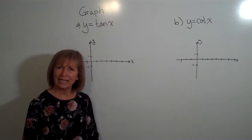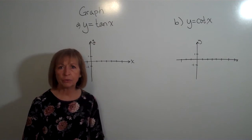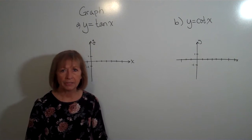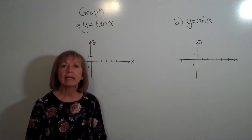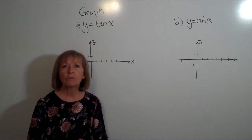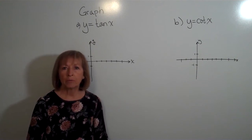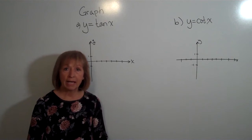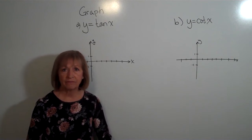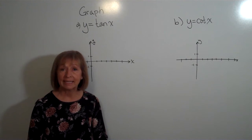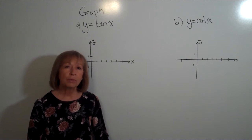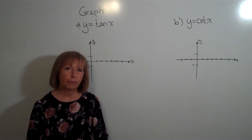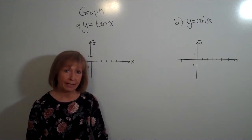For tangent and cotangent, we actually had really nice outputs at 0 and pi over 4, and then at pi over 2 we had values that were either defined or undefined. So we want to increment the axis that way.